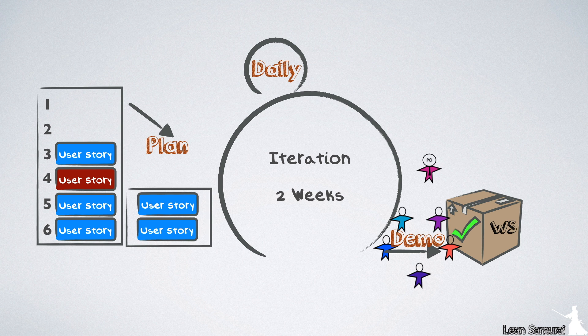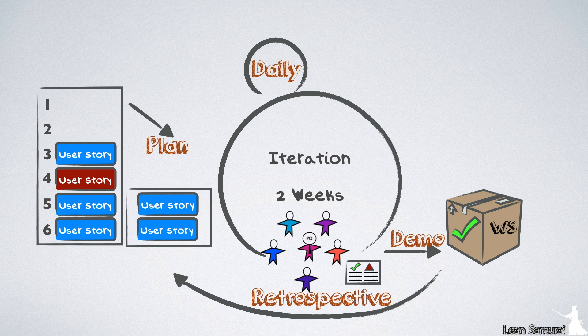At the end of the iteration, they demo the results to the product owner to make sure they had delivered what she had wanted. They then get together to retrospect what they can improve for the next iteration, before starting the cycle again with a new planning meeting. All of this is guided by a Scrum Master who makes sure the team works smoothly within the process and that it keeps improving.